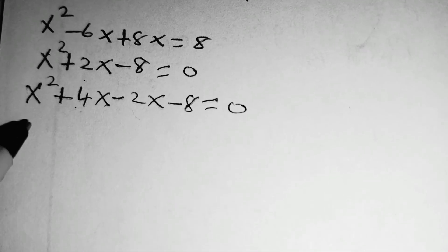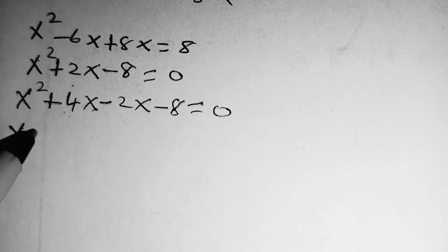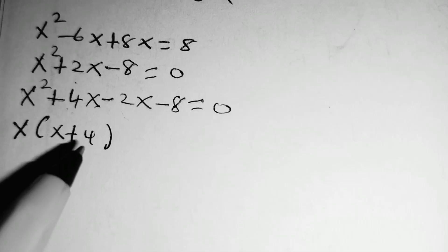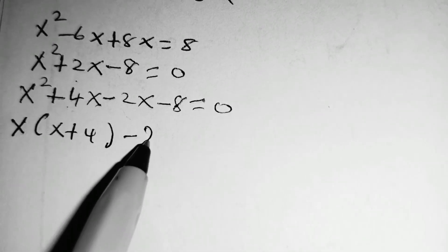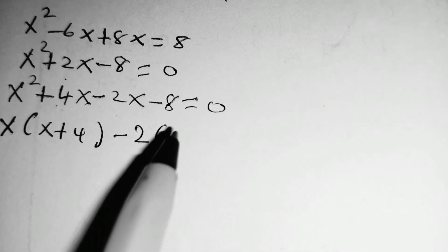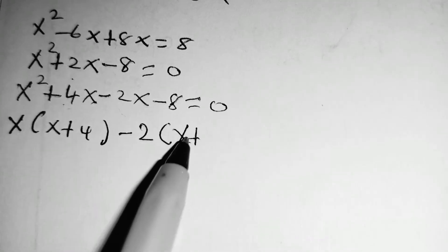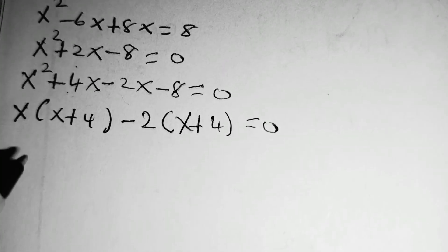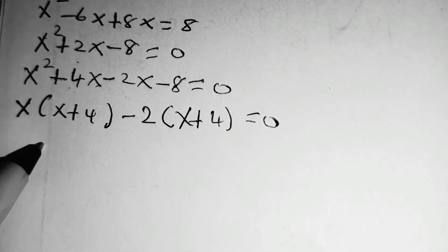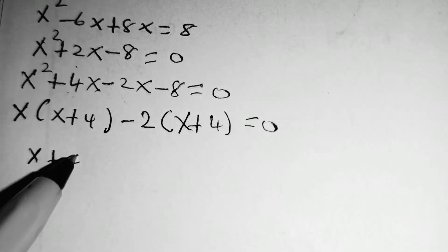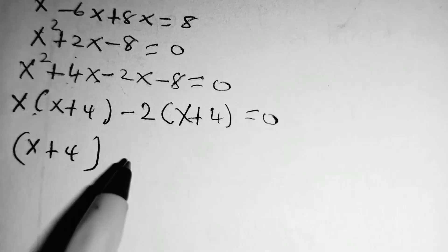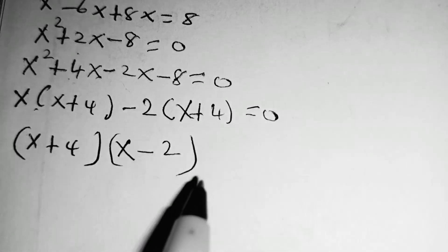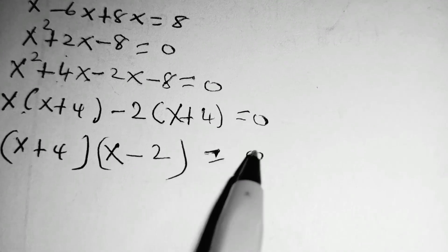So we factor x in the first two factors, so that we shall have x plus 4. Then we factor negative 2 in the last two factors, so that we have x plus 4. This is equal to 0. Then we factorize x plus 4, which is common. Here we shall be left with x minus 2. This is equal to 0.